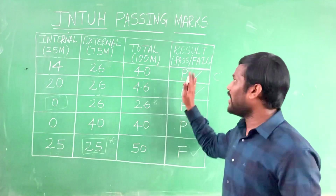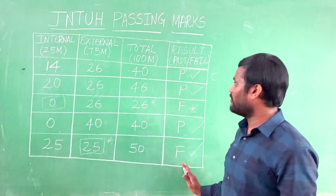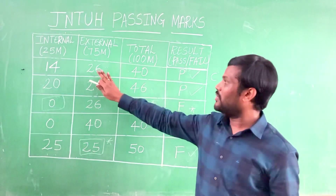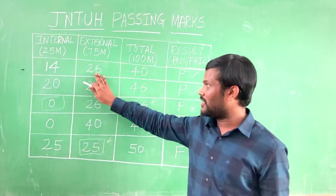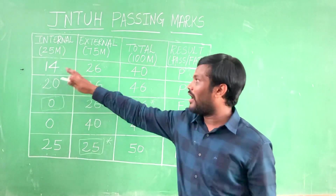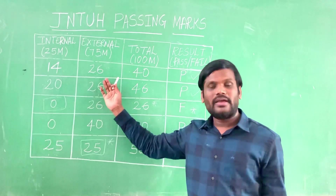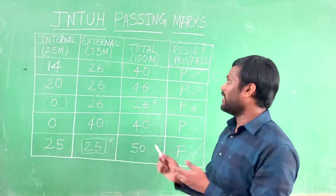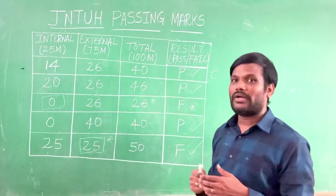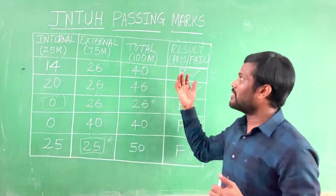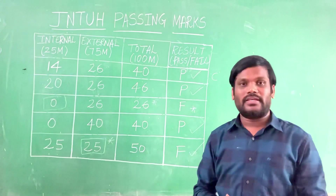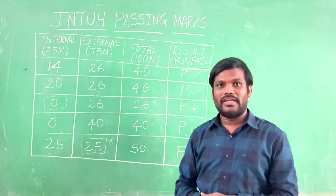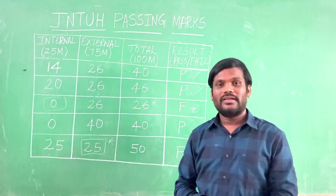I hope it is very clear for all of you — how many marks you need to get in the internals, how many marks you need to get in the external, and when you sum up, that should be greater than or equal to 40. This is the passing mark for JNTUH R18 regulation. Thank you.